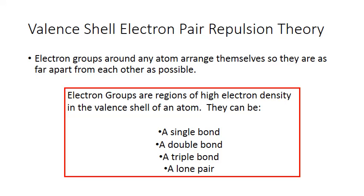There are very predictable patterns for how these electron groups arrange themselves, how far apart they are, and the angle they take relative to each other, depending on the number of electron groups around that atom.